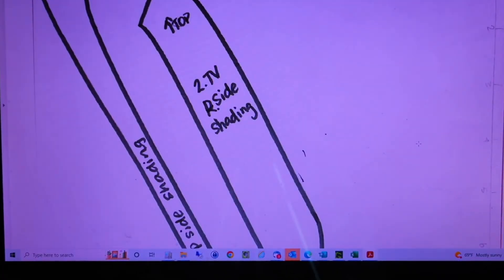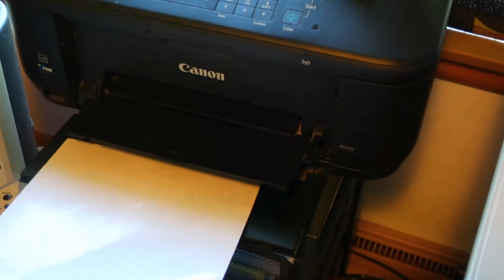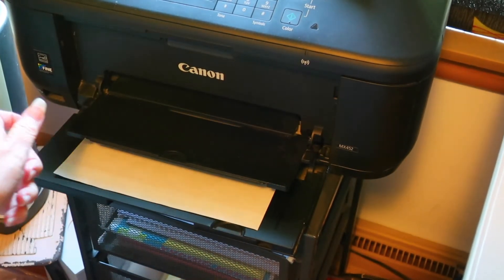Bring up your image on the computer. Place the freezer paper in the paper drawer with the matte side facing the direction that will be printed on.